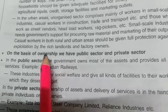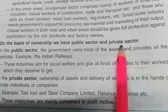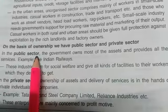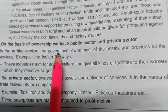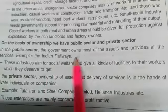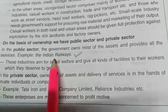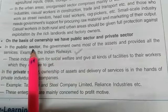Now the third category was on the basis of ownership. When we talk about ownership, we have either public sector or private sector. In the public sector, everything is owned by the government. The best real example is Indian Railways — Indian Railways is a public-owned sector.